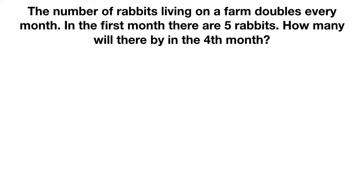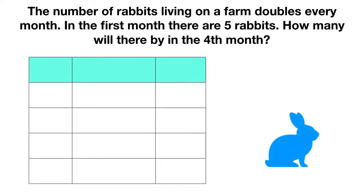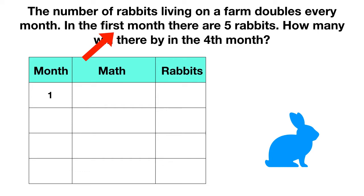In this problem, we have a bunch of rabbits, and the number of them will be changing. Each month, we'll have to do some math to figure out the number of rabbits. We know in the first month, the problem tells us there are five rabbits, so there's no math needed — the answer is just five.